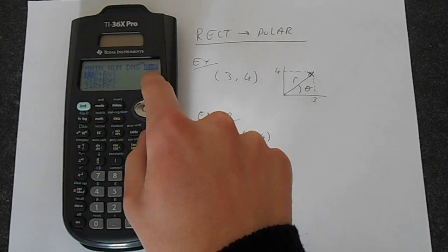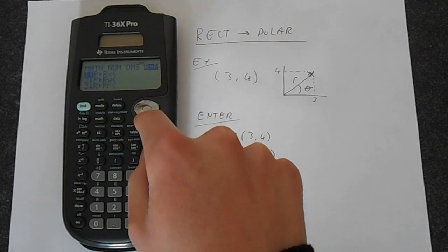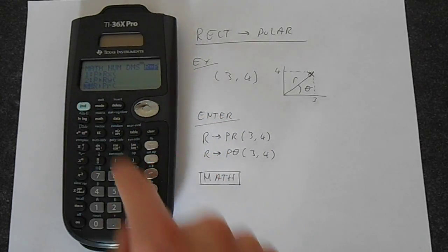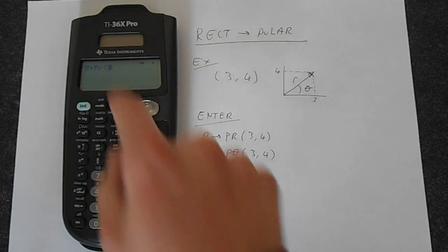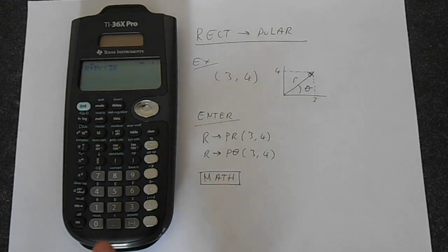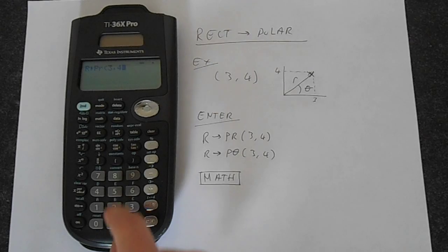So if we go from math and go along to the r→P and if you go to number 3, you just press 3 or press enter on there, you get that function there. And then we just enter 3 and then if we press 2nd function and right down on the dot at the bottom, you get this comma.